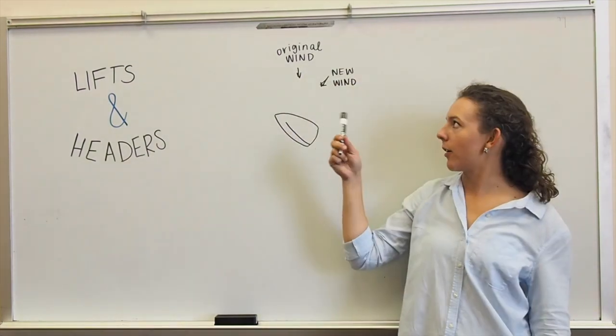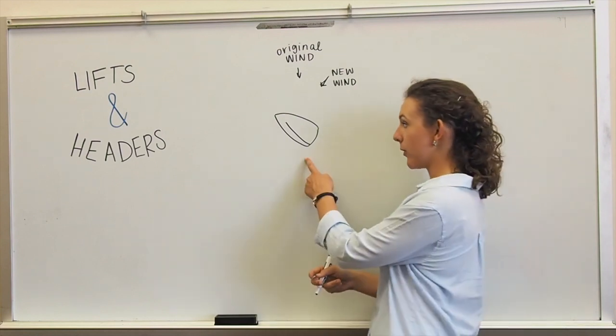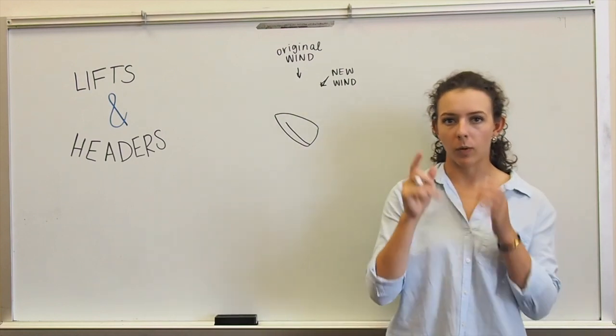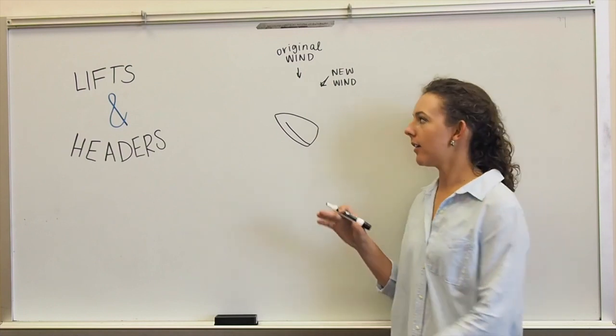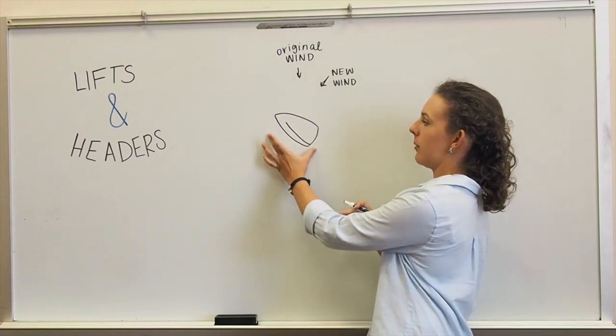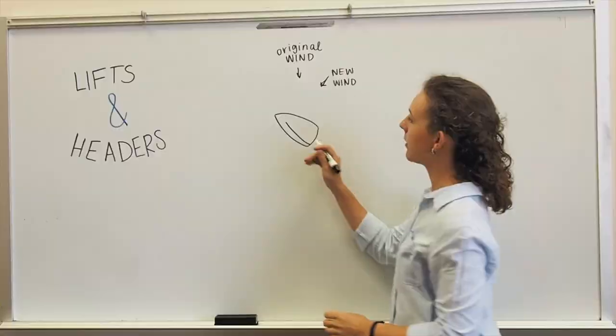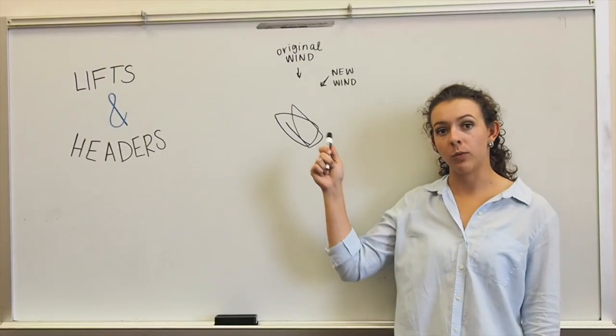If we look at where our new wind direction is coming from, that now puts our boat at a beam reach. Go watch our points of sail video if you don't know what that is. But we're looking to sail close hauled. So this wind direction will now allow the boat to point up to something like this to match the new direction.